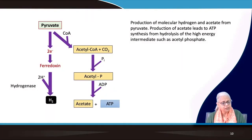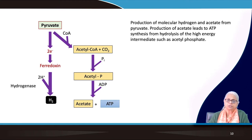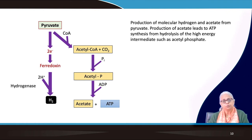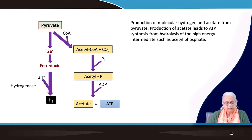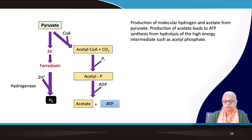Molecular hydrogen and acetate are produced from pyruvate. In the three biochemical pathways, glycolysis is common, ending at pyruvic acid or pyruvate. This pyruvate picks up electrons, resulting in the production of hydrogen, or in the production of acetate and ATP.